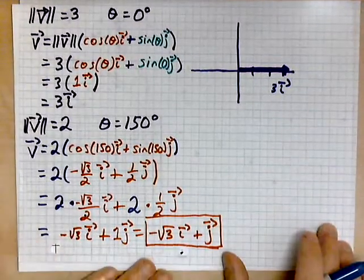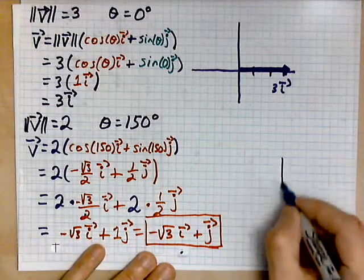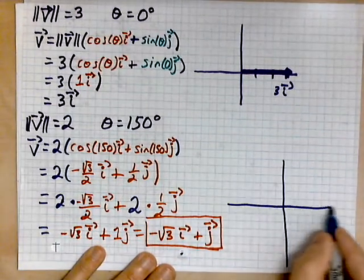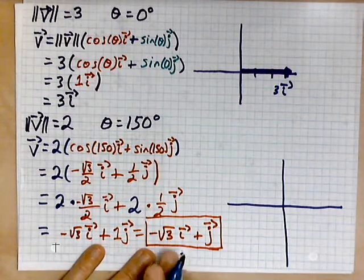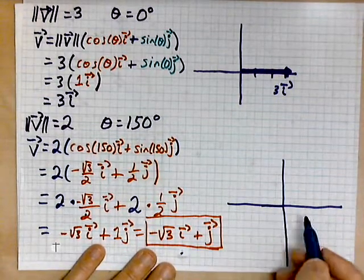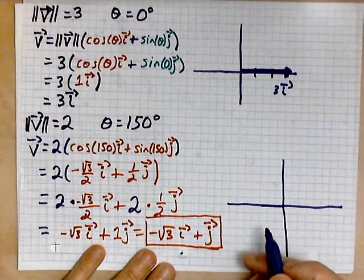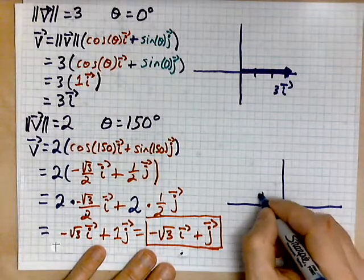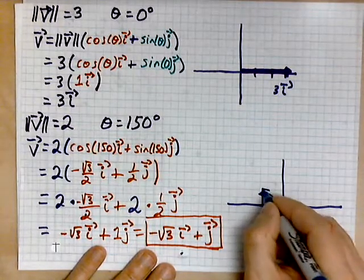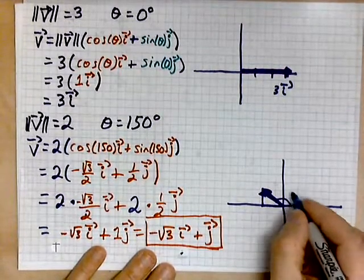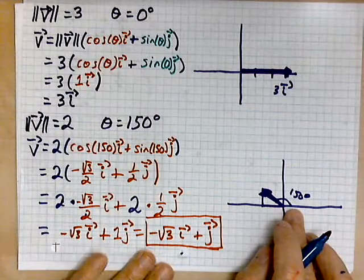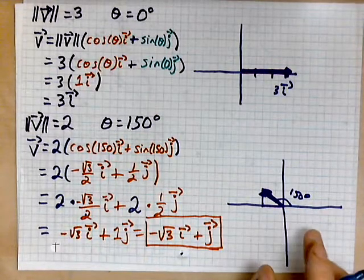This one looks a little different. Once again, draw a little coordinate system. The x component is negative root 3. So, roughly that. That's 1j. So, maybe what we have is this. This is our vector right here. It makes an angle of 150 degrees with the positive x-axis. There you go.